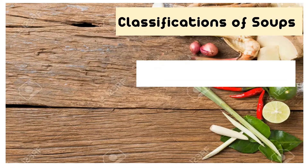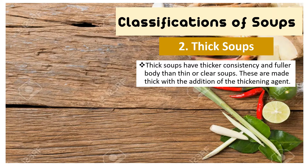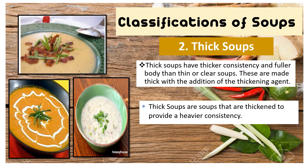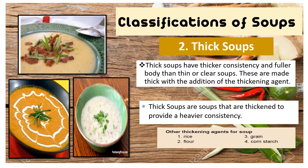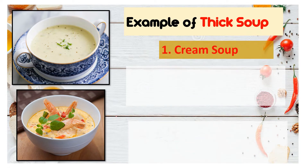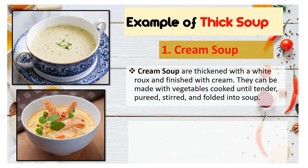The next classification of soups is the thick soup. Thick soups have a thicker consistency and fuller body than thin or clear soups. These are made thick with the addition of thickening agents. Examples of mostly used thickening agents for making soups are rice flour, grains, and cornstarch. It is a soup that is thickened to provide a heavier consistency. The first example is the cream soup, which is thickened with white roux and finished with cream. Roux is a combination of flour and fats. It is called white roux because it is cooked slightly to retain its color. It can be made with vegetables cooked until tender, pureed, stirred, and folded into soups.